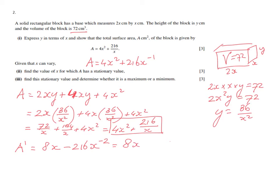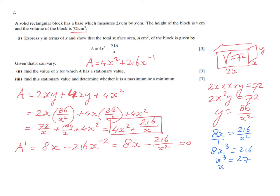So dA/dx equals 8x minus 216 over x squared. For a stationary value, set that equal to zero: 8x equals 216 over x squared. Cross multiplying gives 8x cubed equals 216, so x cubed equals 27, and taking the cube root gives x equals 3. That is the value of x for which A has a stationary value, meaning the derivative equals zero.